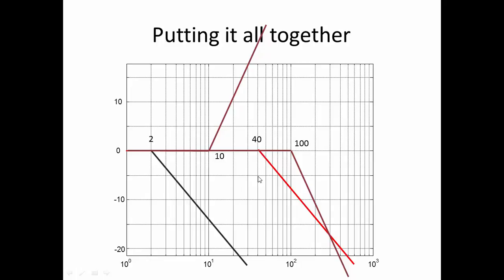Now, we have something going up at 20, and something coming down at 20, which means we're going to be flat between 40 and 100, and at 100, it's going to come down at minus 40 dB per decade.